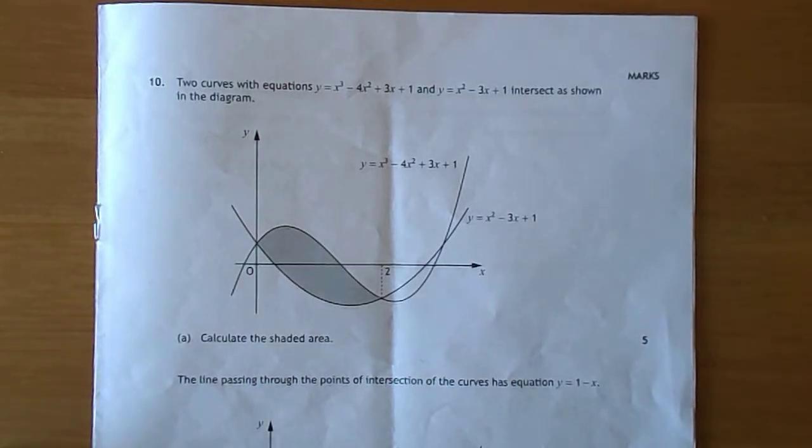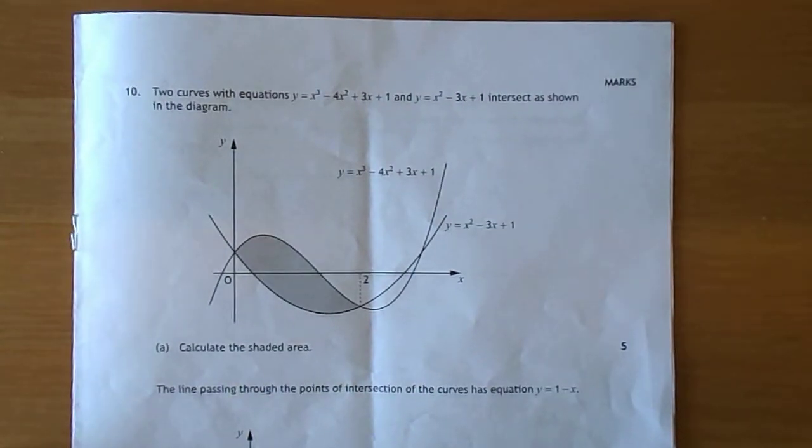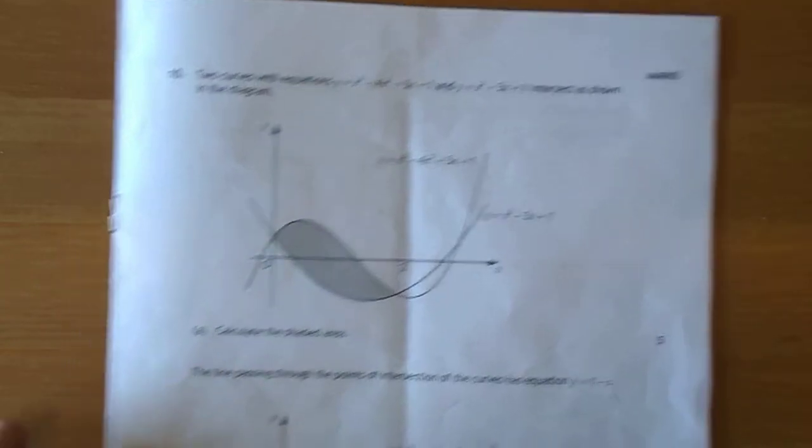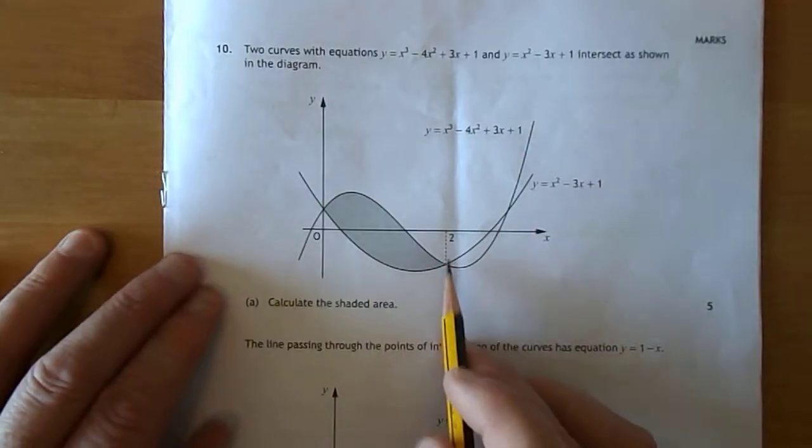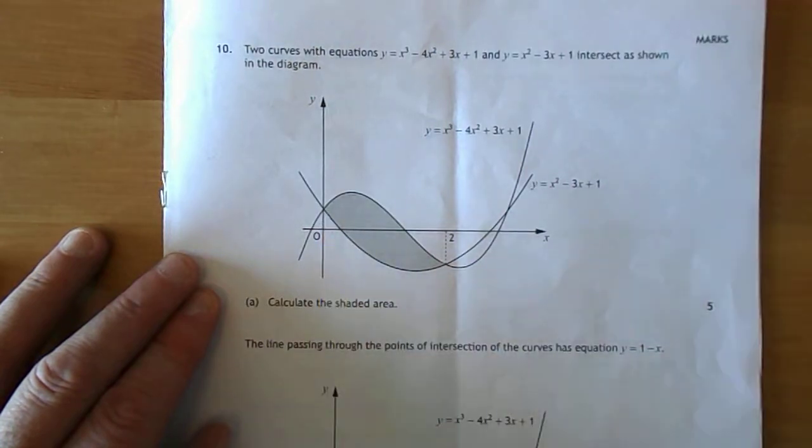In question 10, you're presented with two curves: y equals x cubed take 4x squared plus 3x plus 1, and y equals x squared take 3x plus 1. They intersect as shown at the points x equals 2 and x equals 0.